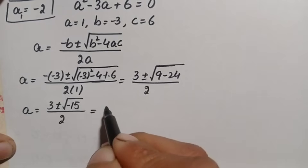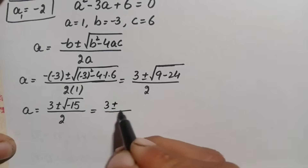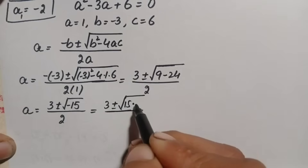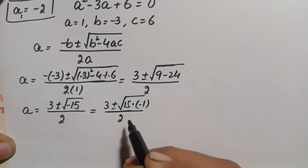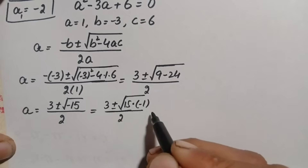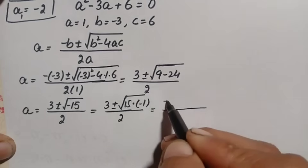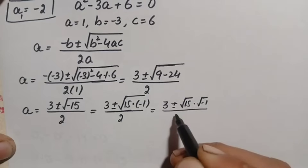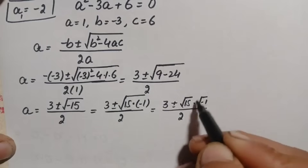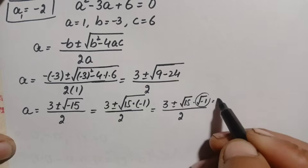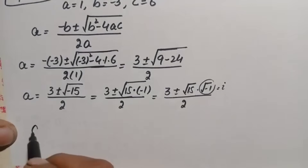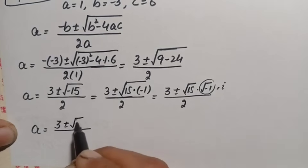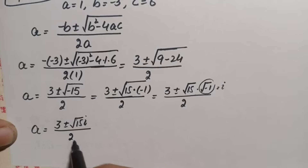We write the square root of negative 15 as the square root of 15 times negative 1. Splitting the square root gives the square root of 15 times the square root of negative 1. Replacing the square root of negative 1 with the complex identity i, the result becomes 3 plus or minus the square root of 15 times i, divided by 2.